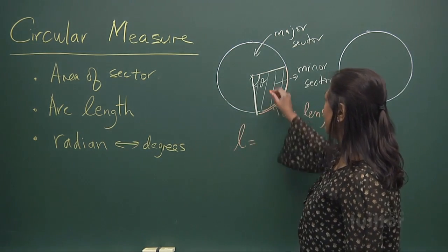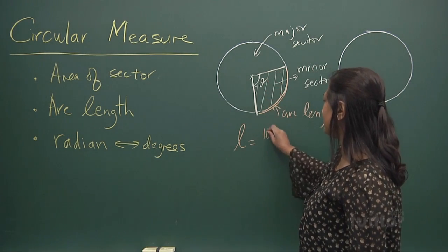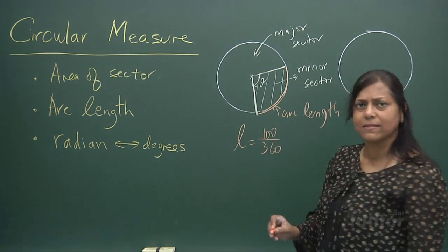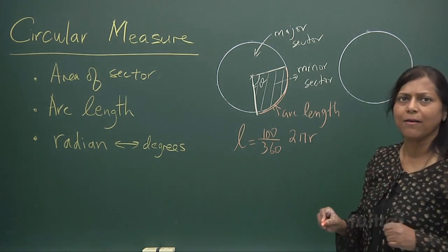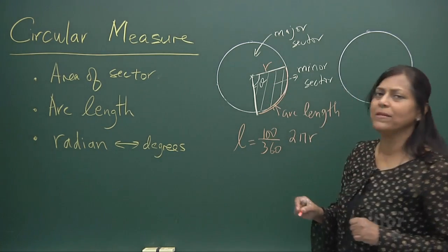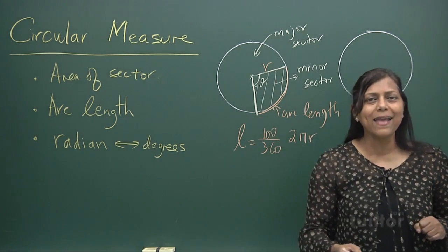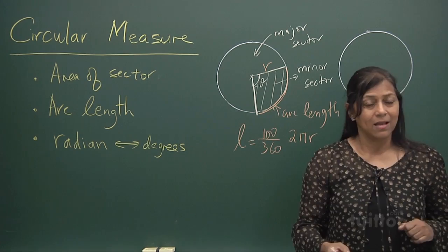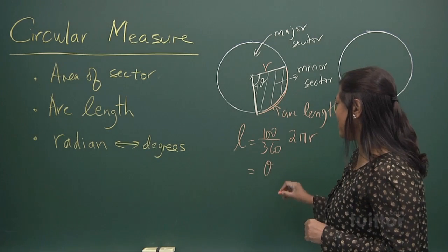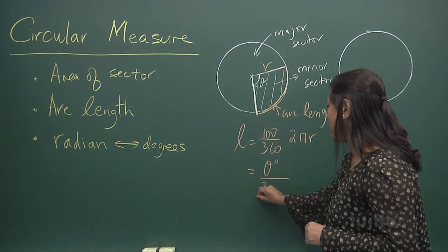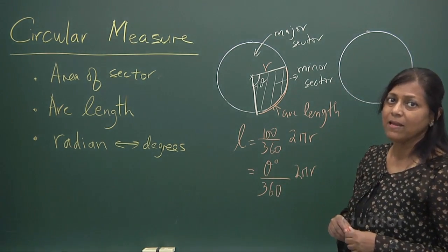So arc length equals a fraction of the angle. If the angle is measured in degrees — for example, if this is 100 degrees, it's 100 out of 360 degrees, which is a fraction of a whole circle called 2πr, where r is the radius of this circle. So when the angle is measured in degrees, if it's theta degrees, the arc length equals theta over 360 degrees times 2πr.